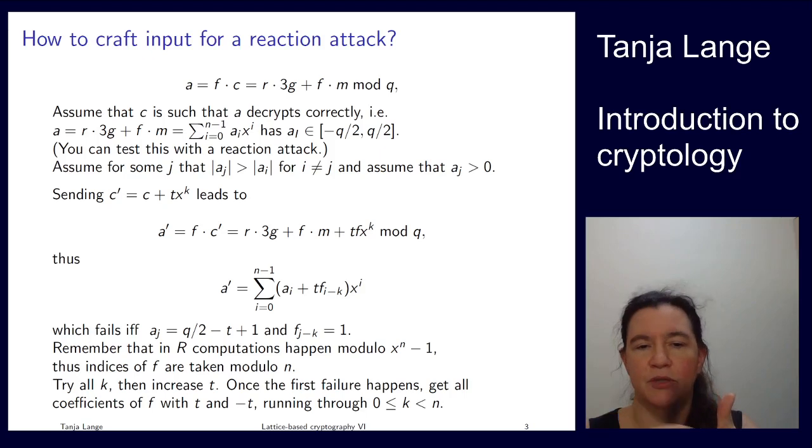So what we do, we try all k, so that means we're trying all possible shifts. None of them fails, then we increase t by one. So we've tried with one times x to the k for all k's, two times x to the k for all k's. At some point we hit a failure, say we hit a failure at t, and then we can start shifting.